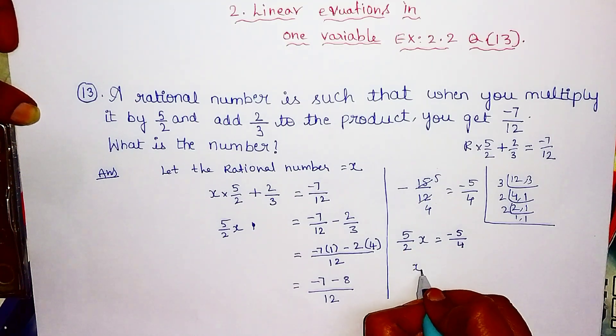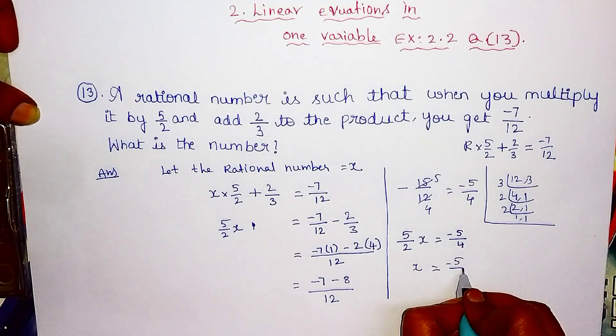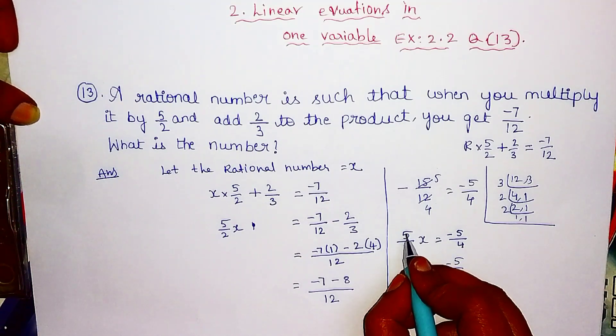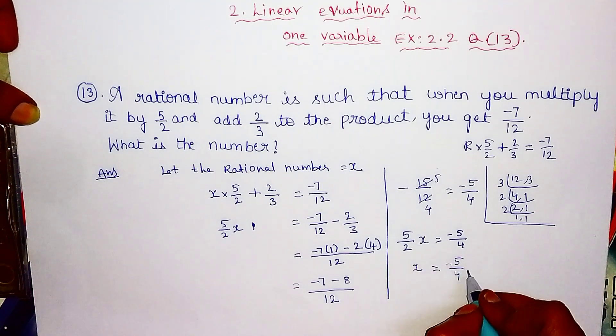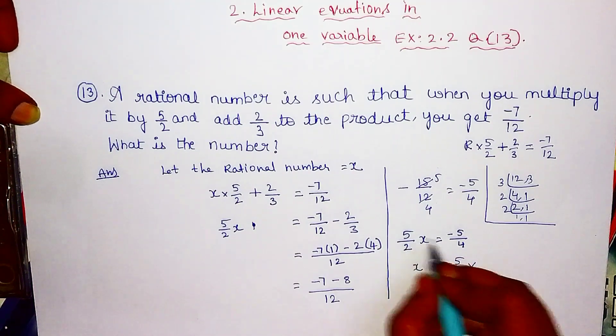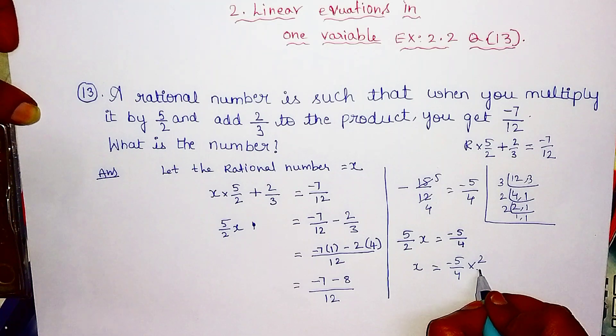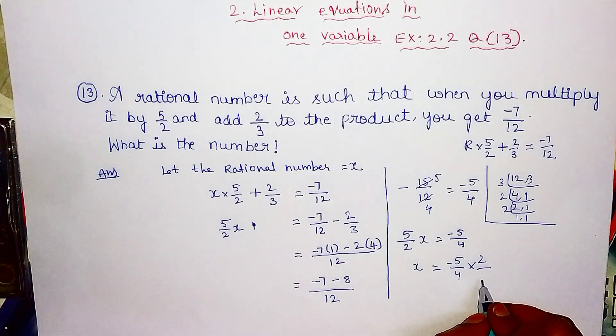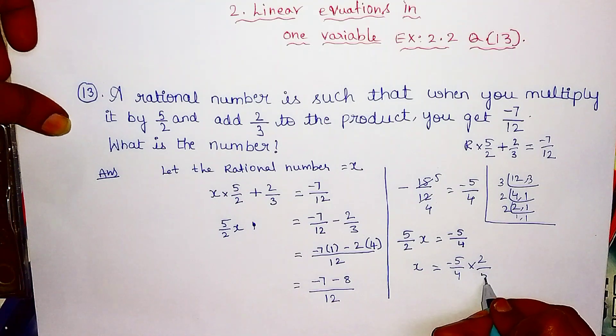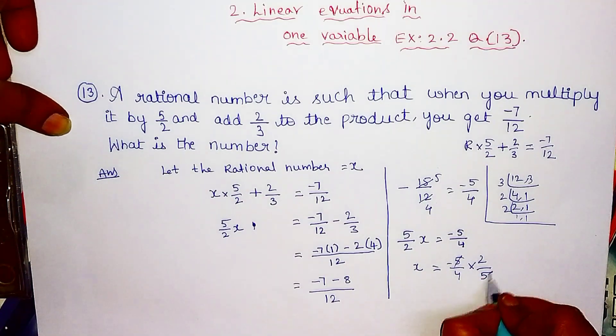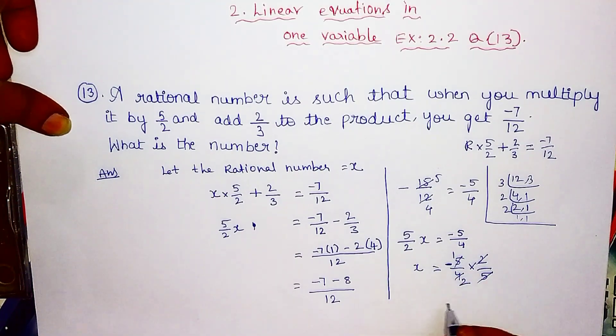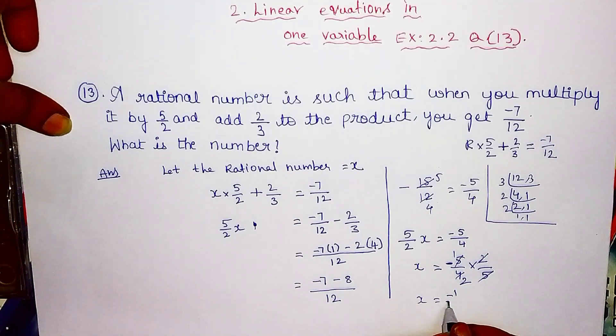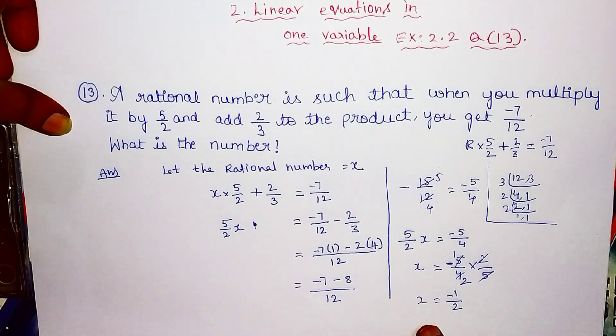This is equal to minus 5 by 4. It is a rational number.